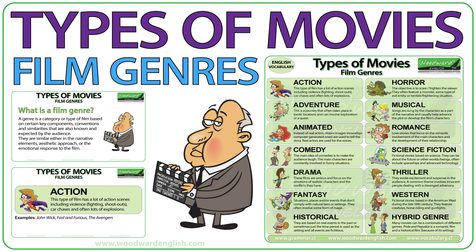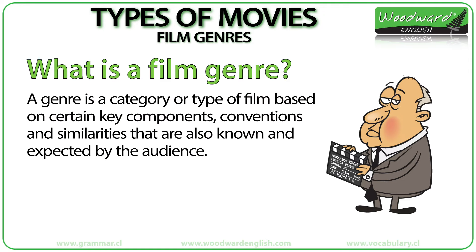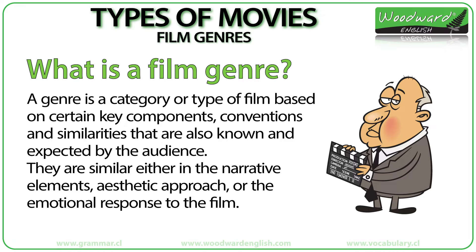Types of Movies — Film Genres. What is a film genre? The genre is a category or type of film based on certain key components, conventions and similarities that are also known and expected by the audience. They are similar either in the narrative elements, aesthetic approach or the emotional response to the film. Let's look at some of the most common types of movies or film genres.